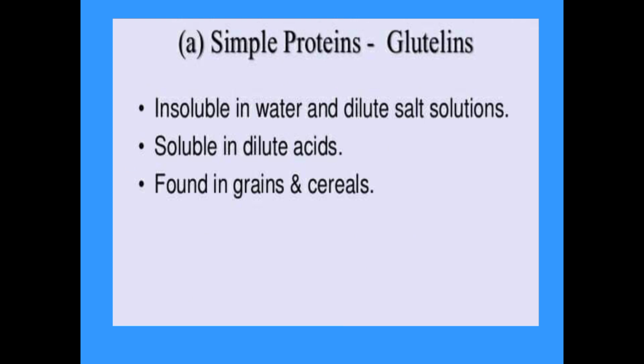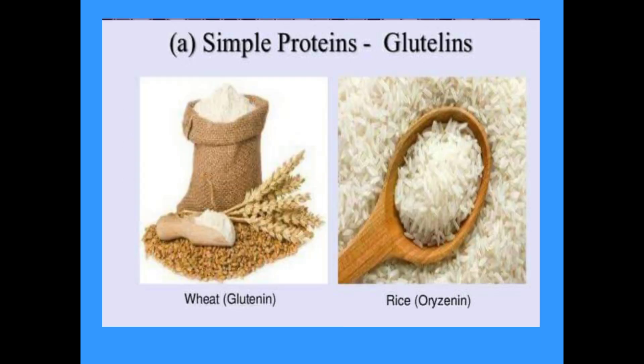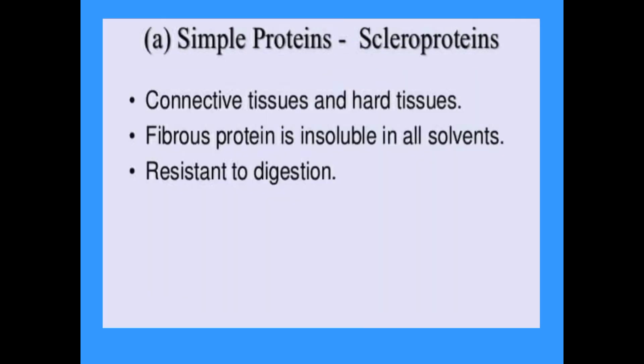Another simple protein form is glutelins — insoluble in water and dilute salt solutions, but soluble in dilute acids. Found in grains and cereals: in wheat it is called glutenin, and in rice it is called oryzenin. Simple proteins also include scleroproteins, which are connective tissue and structural proteins. The fibrous scleroproteins are insoluble in all solvents and resistant to digestion.